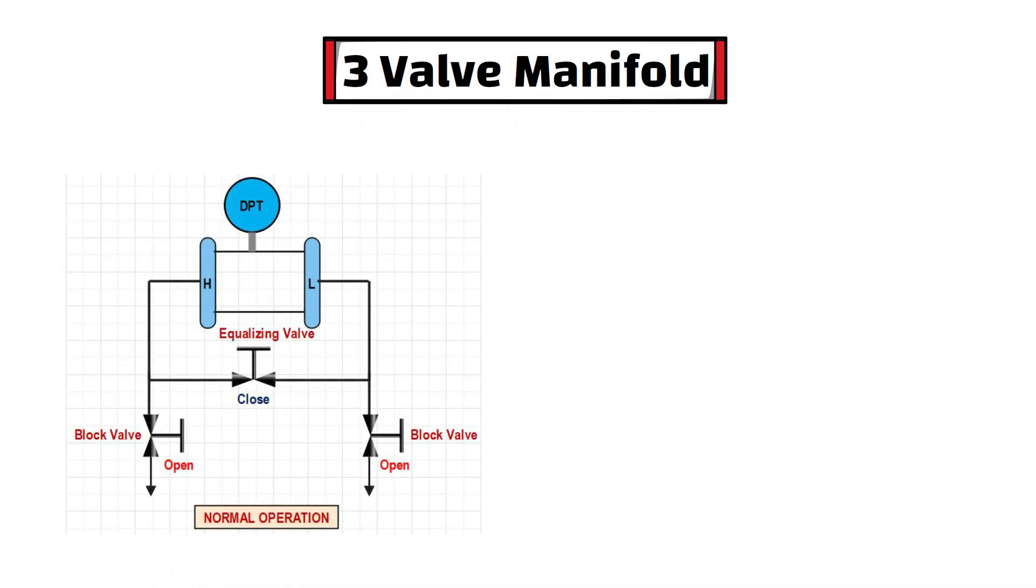First of all, let's take an example of three-valve manifold. As you can see in normal operation, both block valve is in open position and equalizing valve is in closed position.